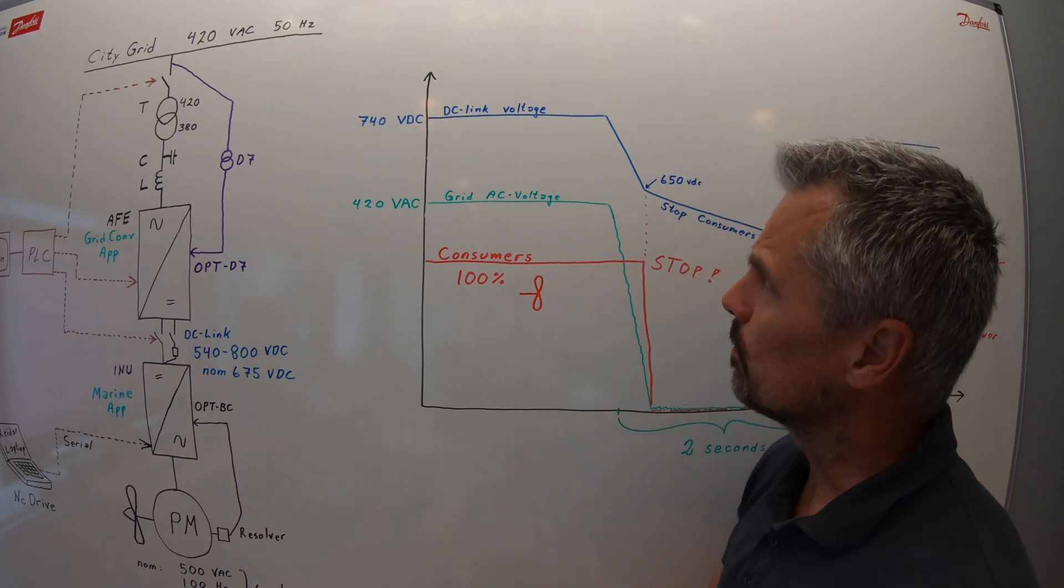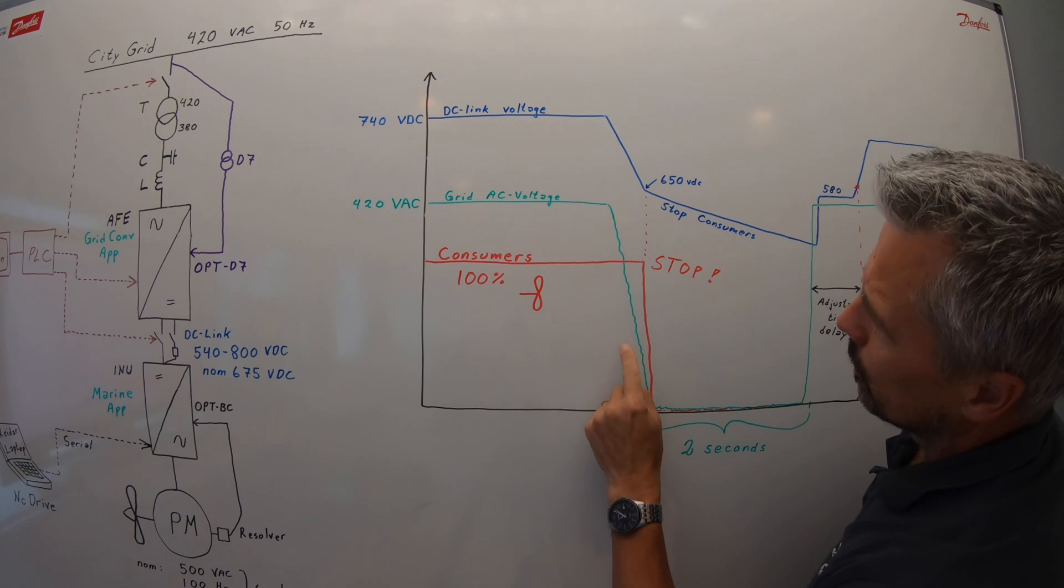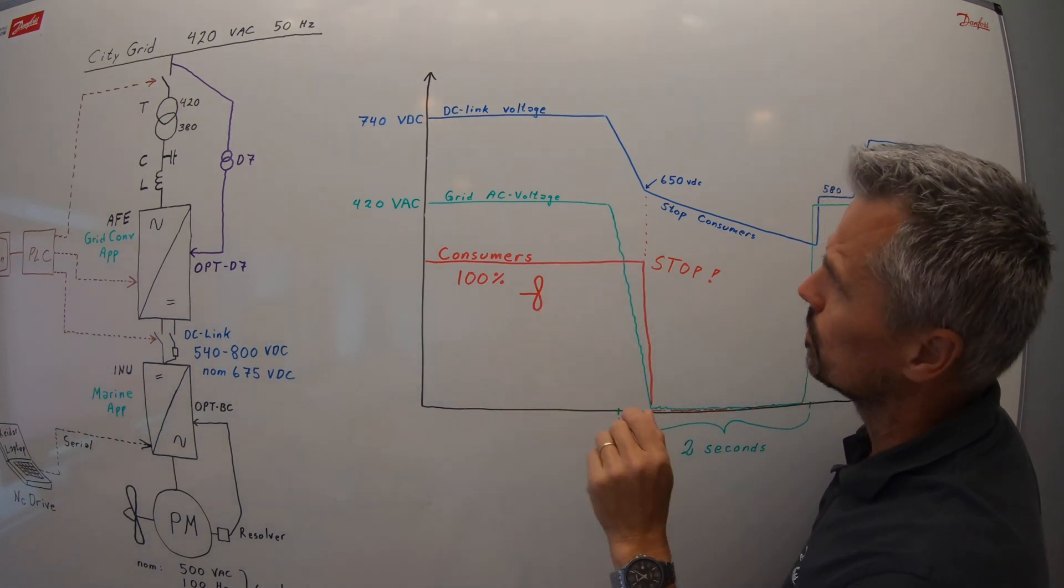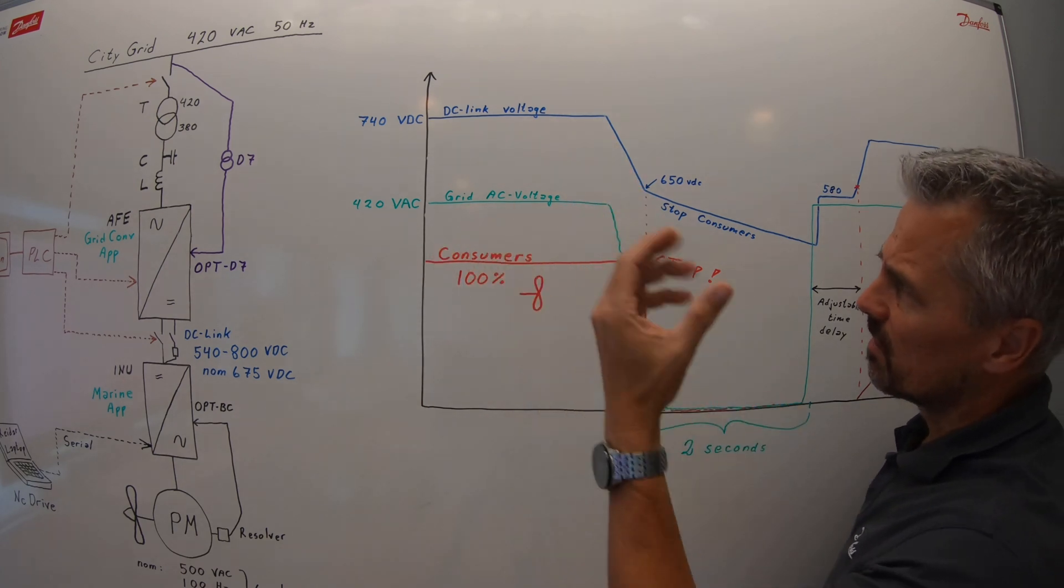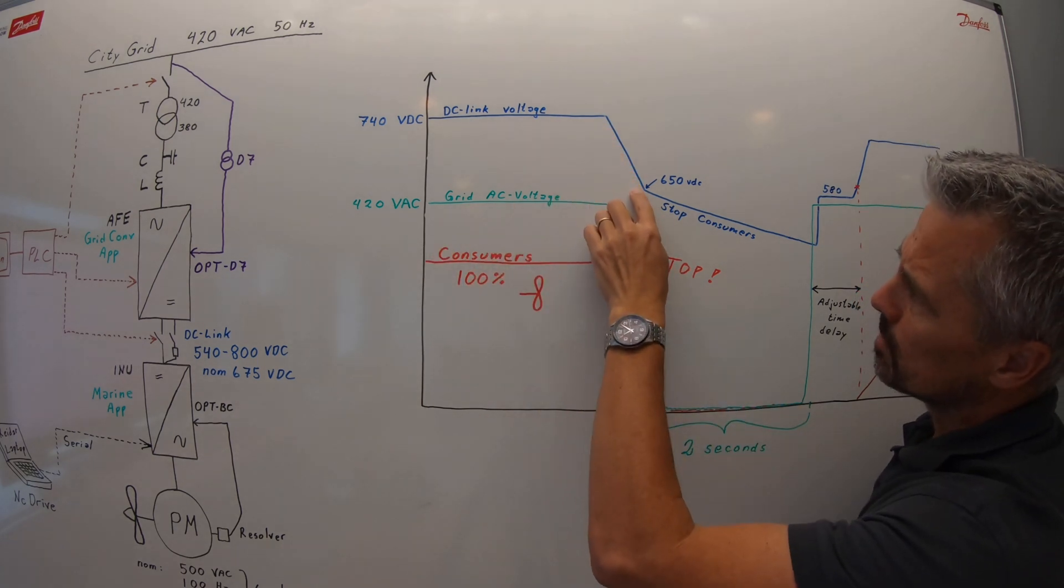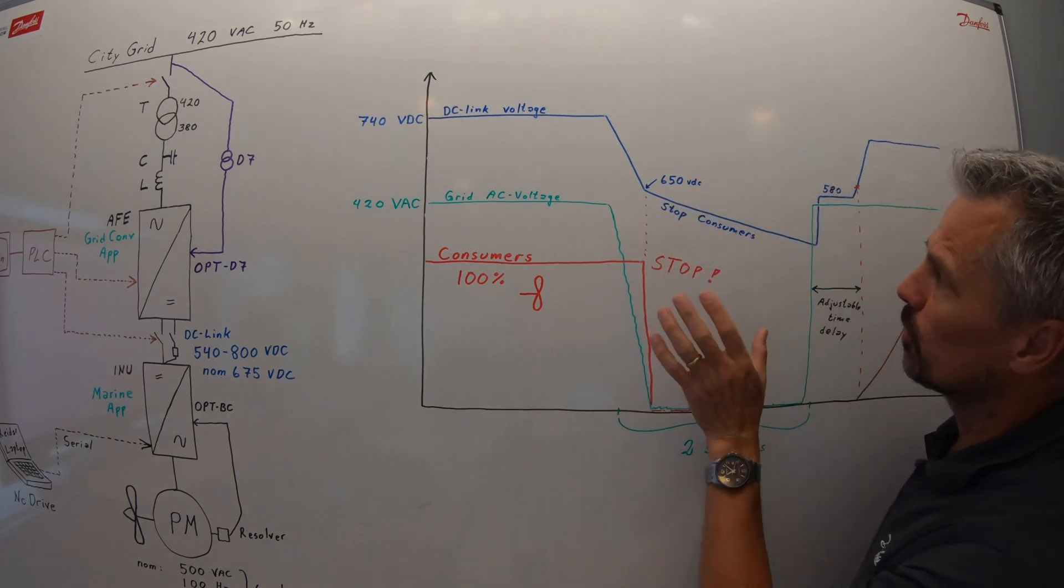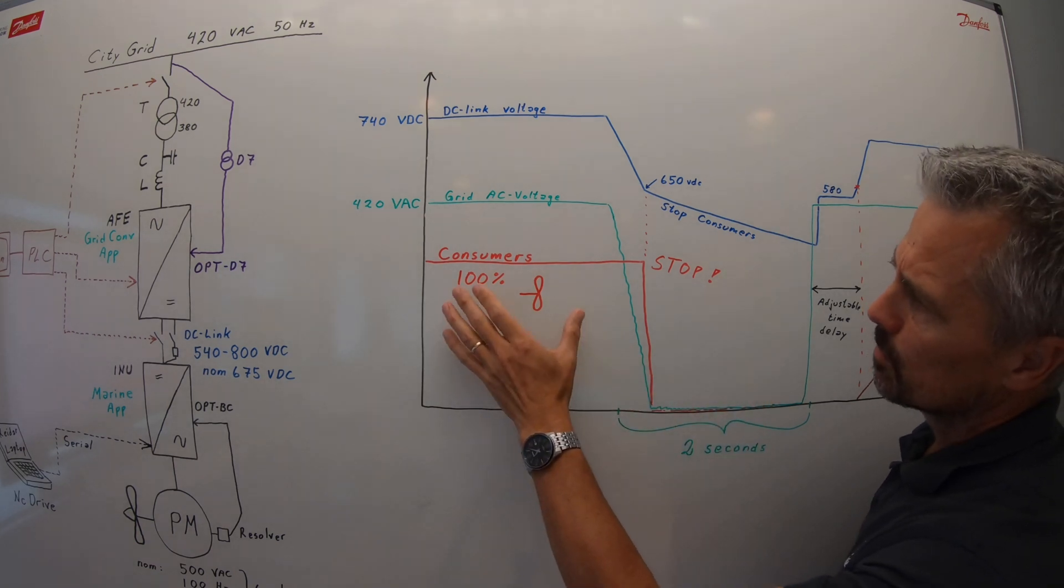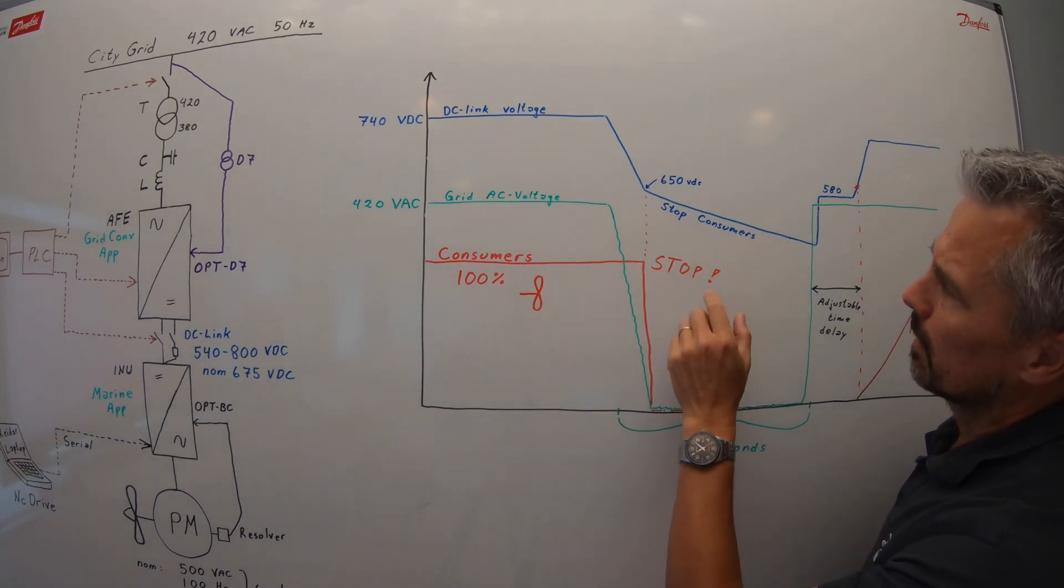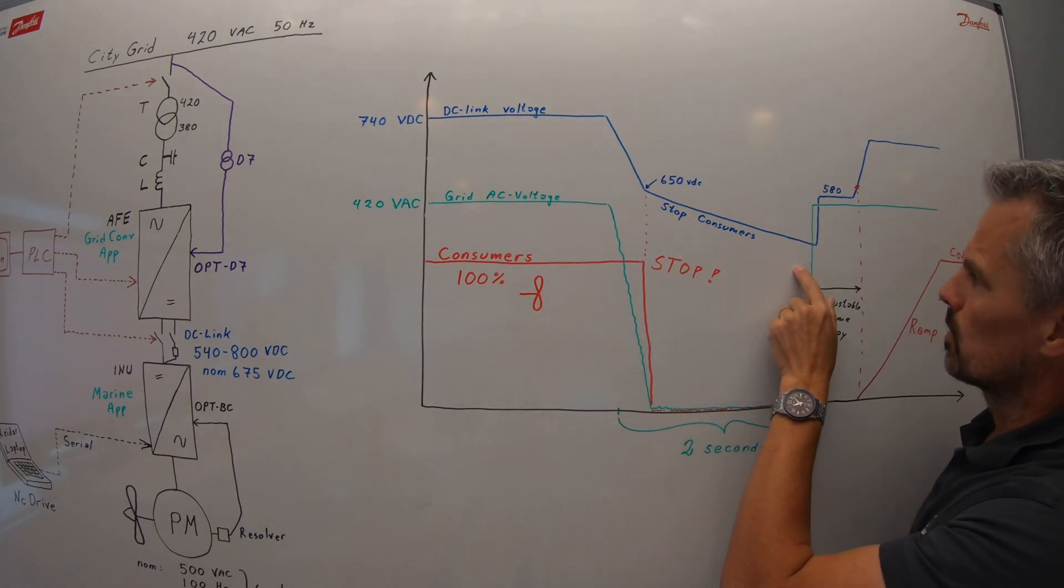On the DC volt, it looks like this. When you have the green curve here, the AC voltage drops, the consumers will extract energy still from the bus down to the level we have set on the inverters, where they stop, stop extracting energy. So the propellers, consumers, they will stop extracting. In this way, we preserve the DC link as long as possible.